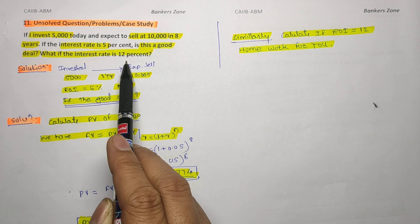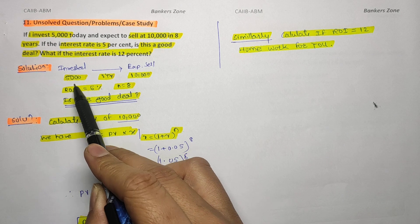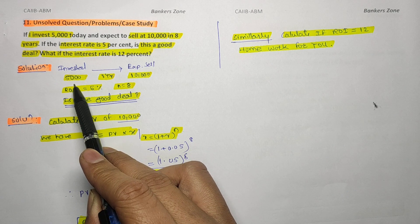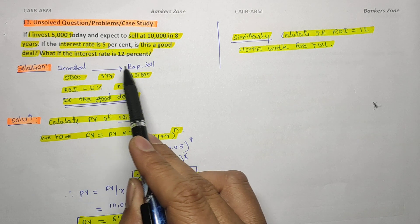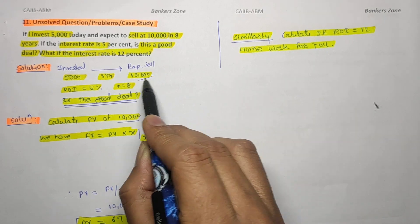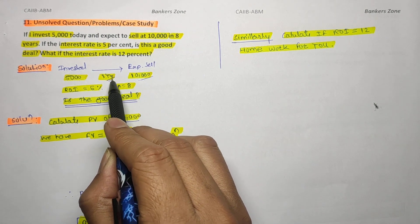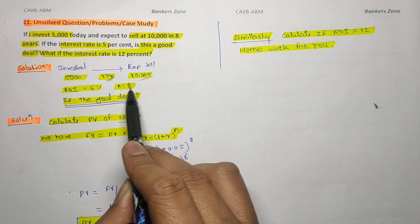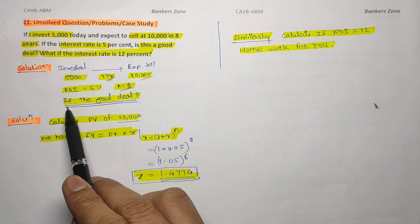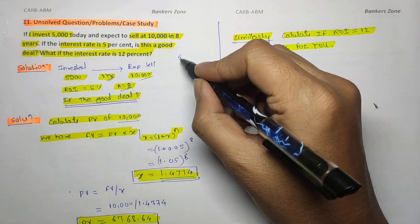Here's how to solve that. You are investing 5000 rupees and you will encash that investment at 10,000 rupees. So you are investing 5000 and getting 10,000 rupees after eight years. The rate of interest given is five percent and the number of years is eight. They are asking us whether this deal is good or not.